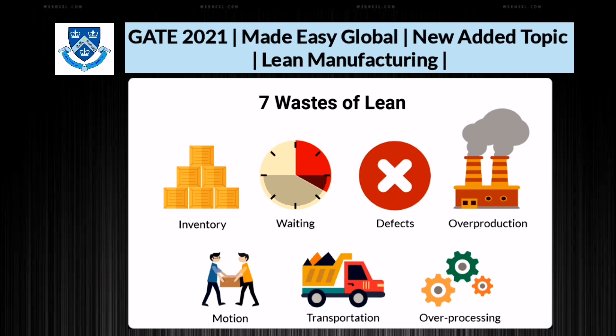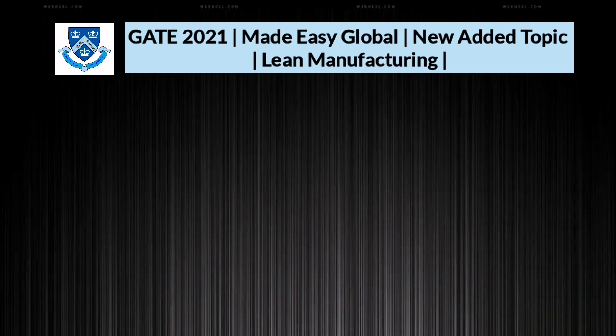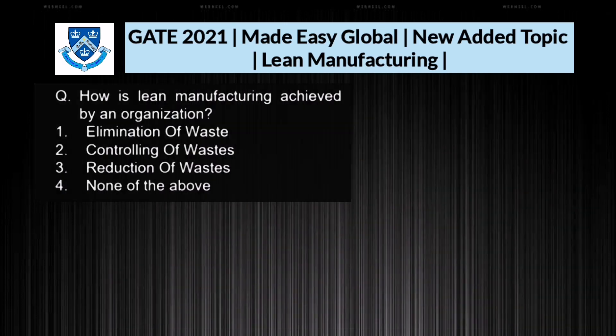The seven wastes of lean are: inventory, waiting, defects, overproduction, motion, transportation, and over-processing. By eliminating these wastes, we can achieve lean manufacturing.